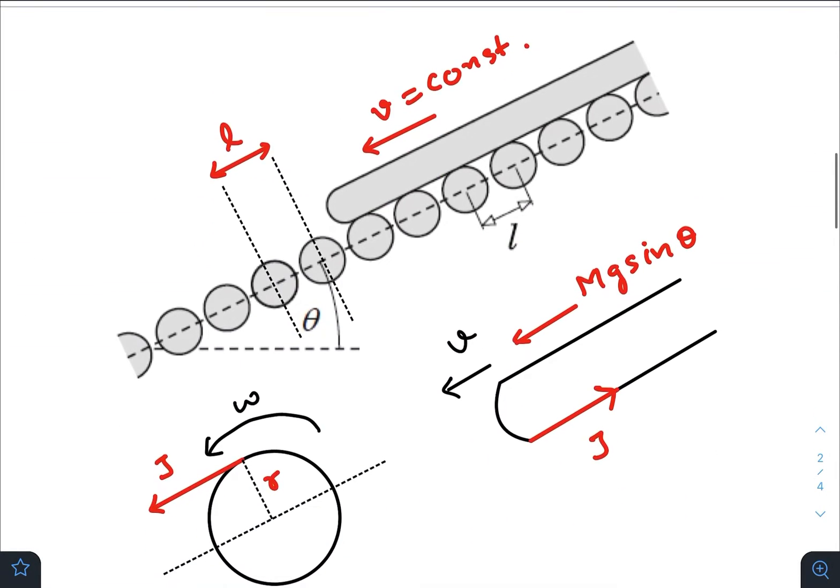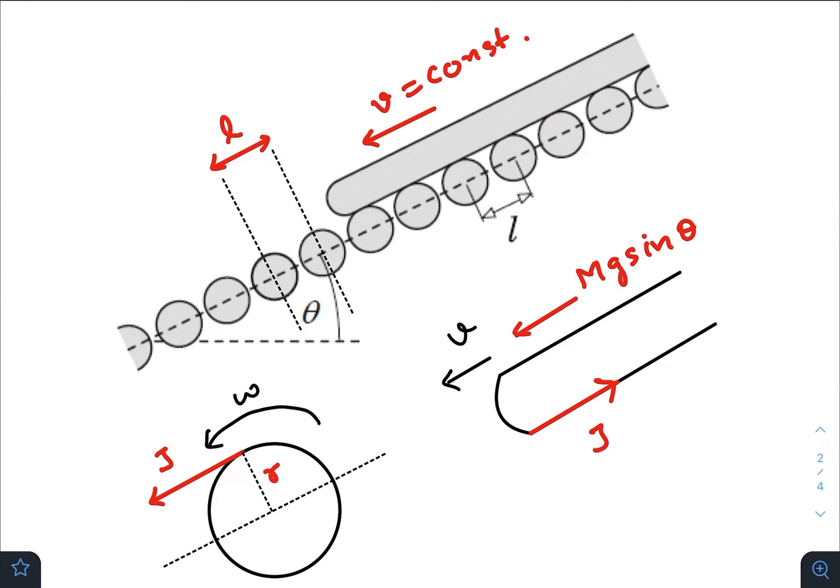So what happens when you rest the plank on the rolling mill? Gravity pulls the plank downwards trying to increase the speed of the plank. But as the plank comes downwards, it hits each cylinder, each roller.